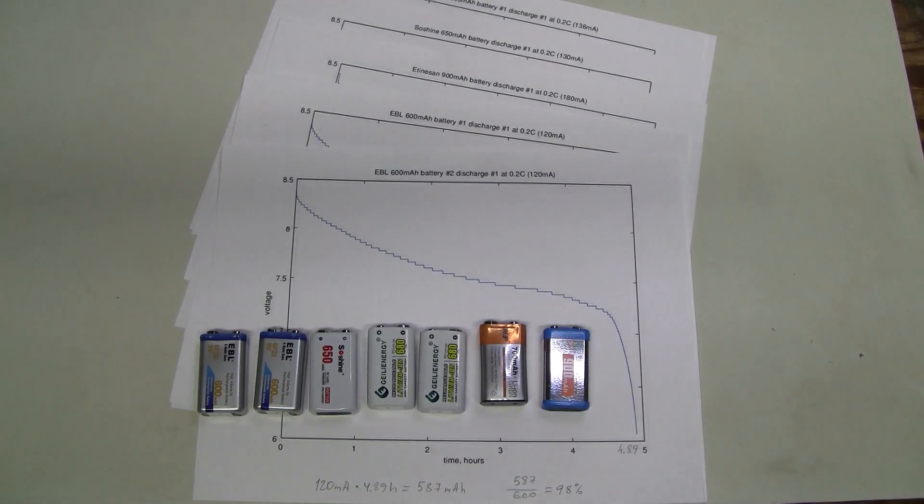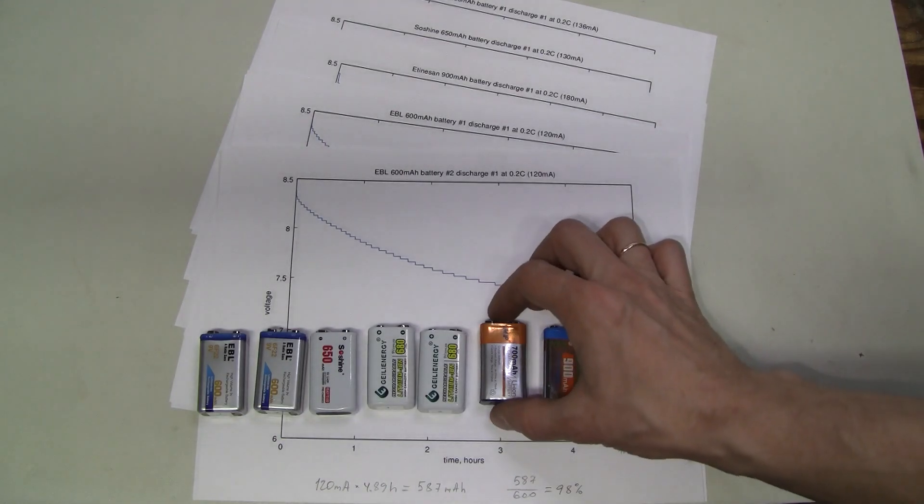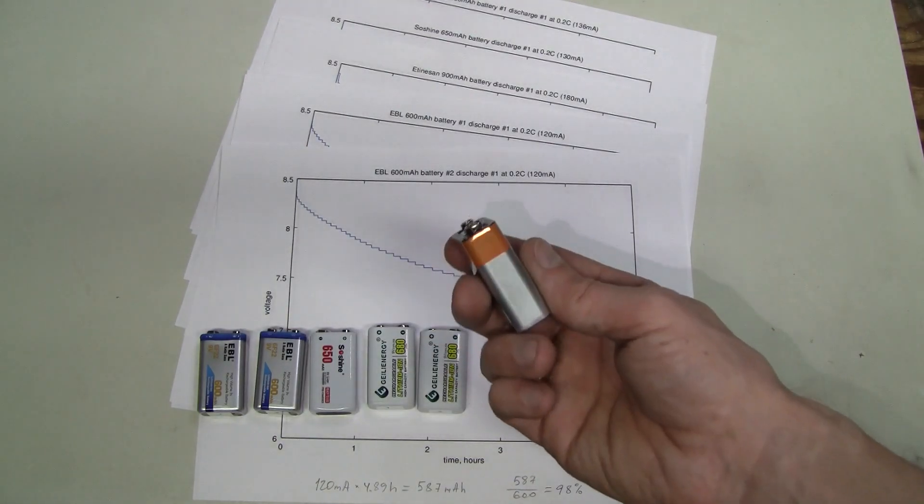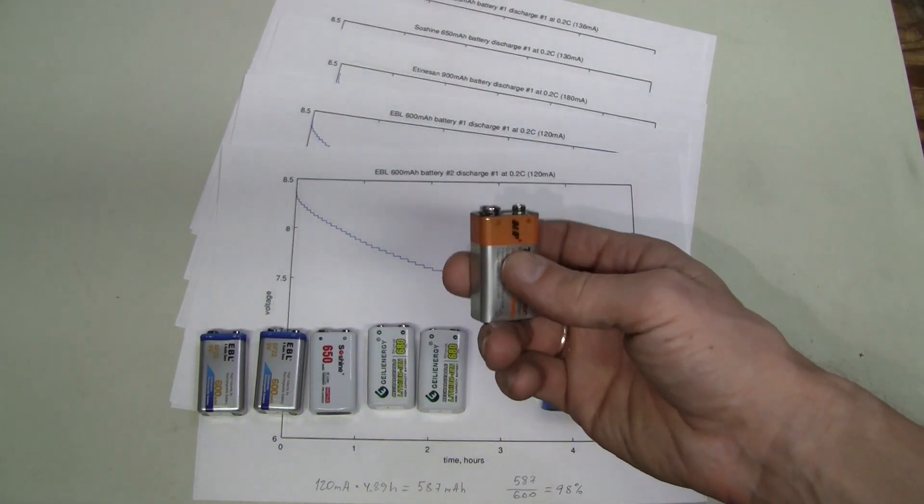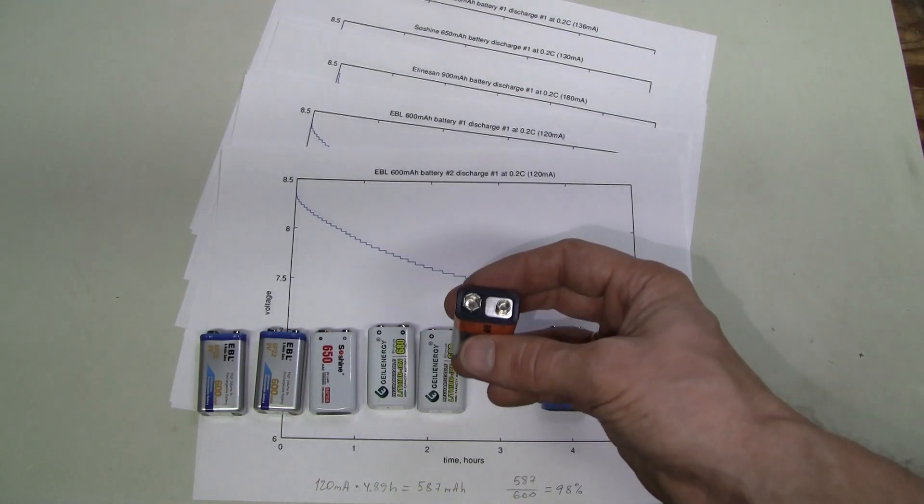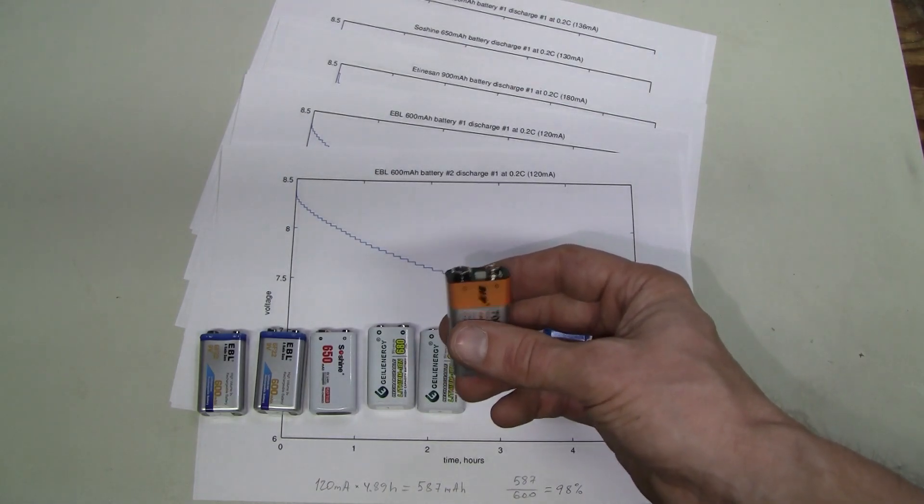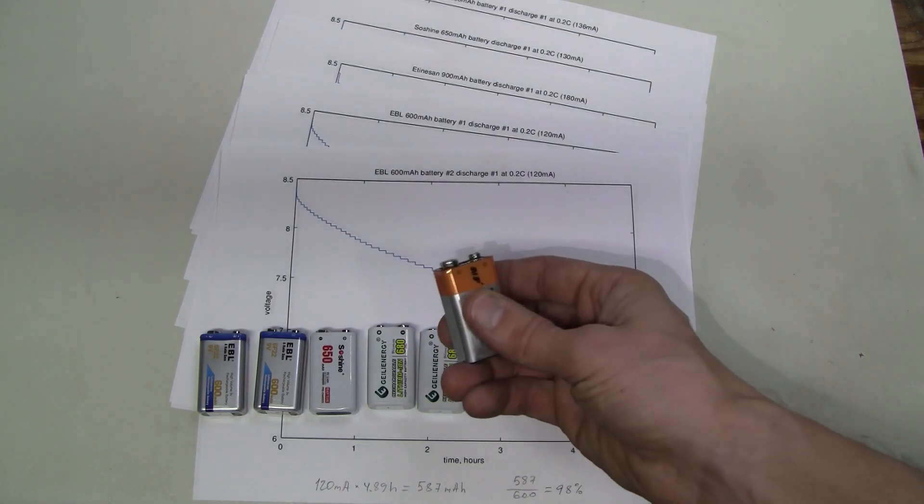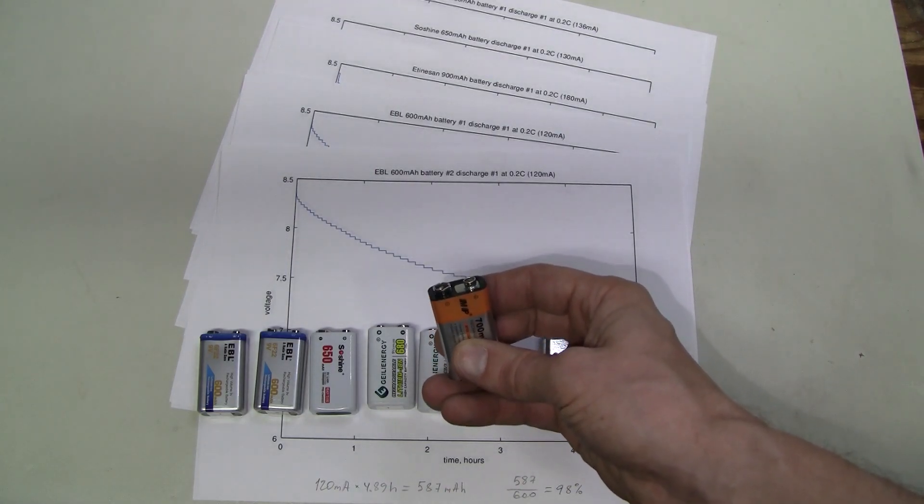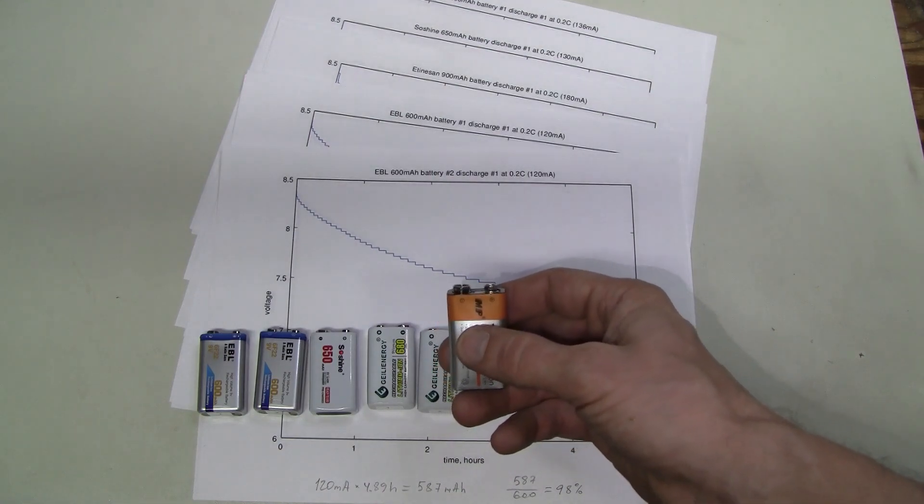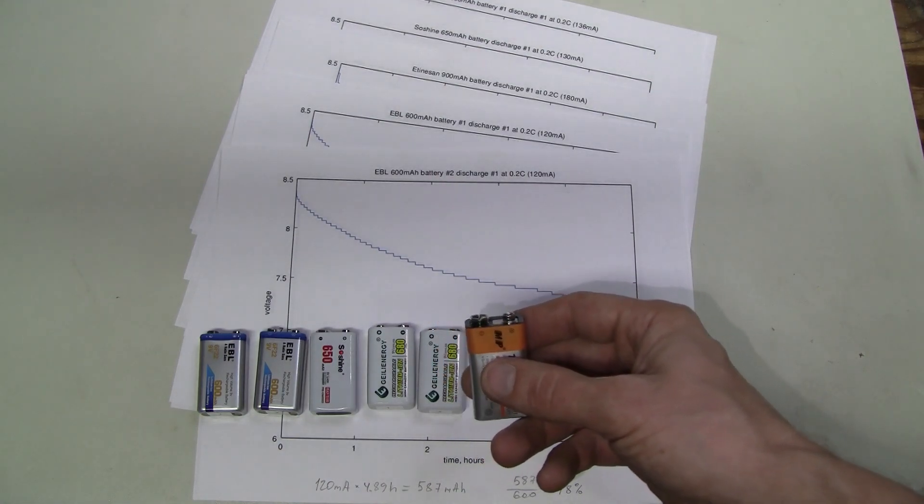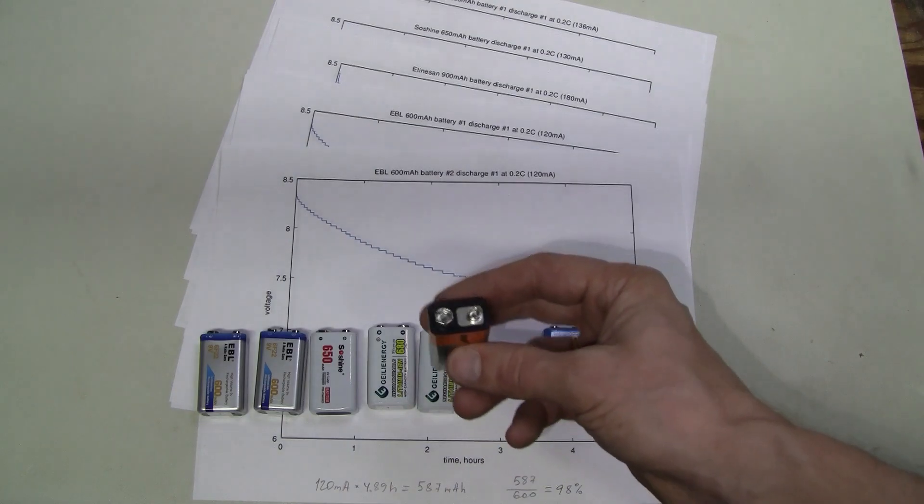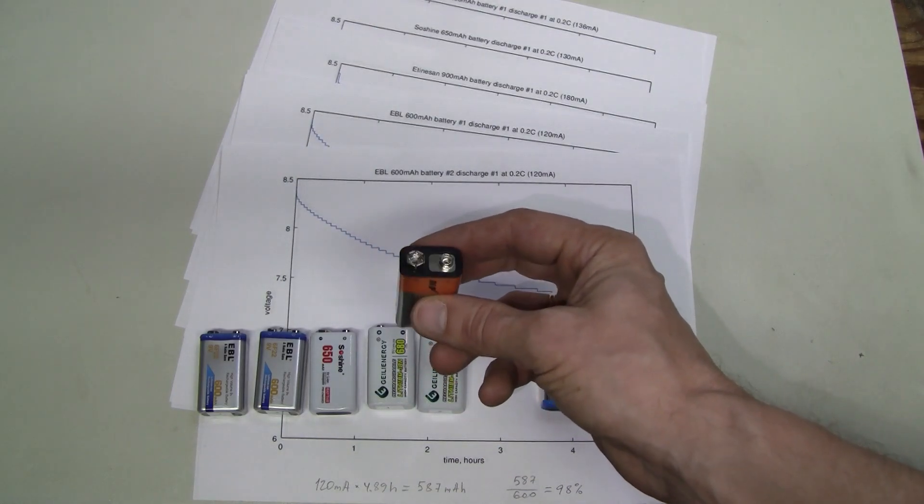Here we have the results. I ran the test twice for each battery except this one because it failed. I hooked it up to the power supply to charge and when I came back after a while it appeared charged. The voltage was 8.4V and it was not taking any more current. But when I turned off the power supply the voltage dropped to zero.